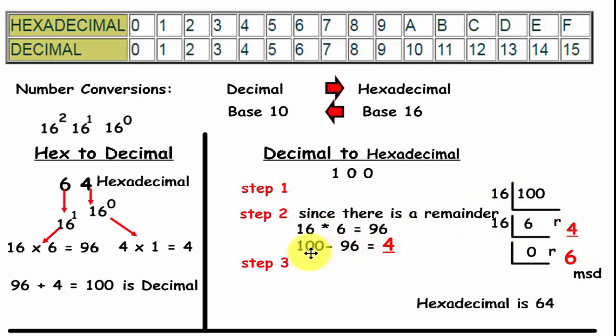However, you must make sure you understand that 16 times 6 is 96. 100 minus 96 is a remainder of 4. How many times does 16 go into 6? 0 times with a remainder of 6. So the answer here is 64. If you look over here, that's the hexadecimal answer.